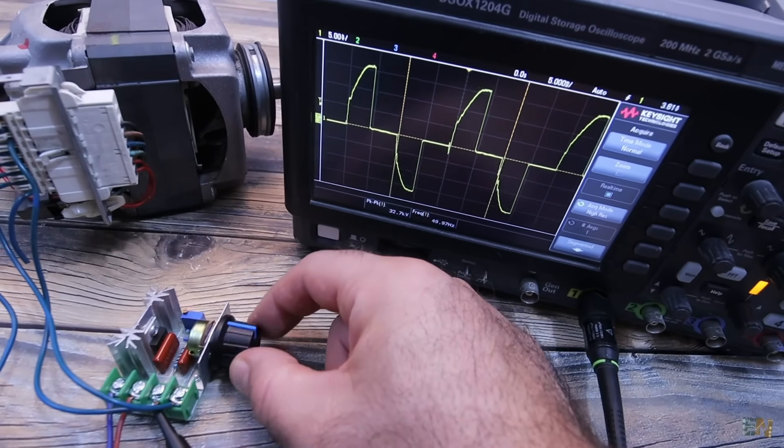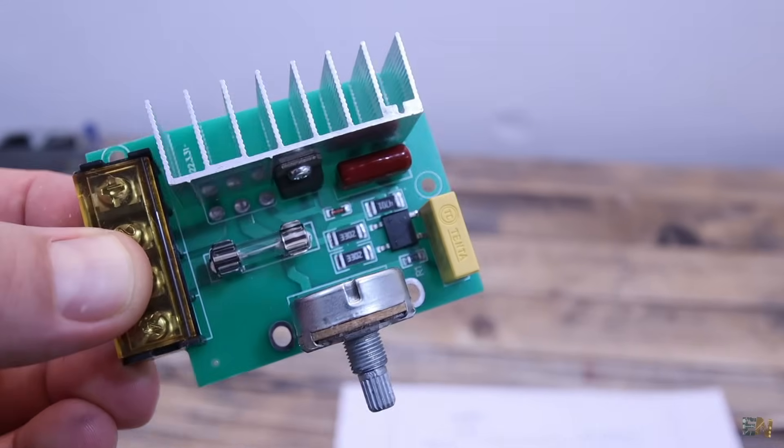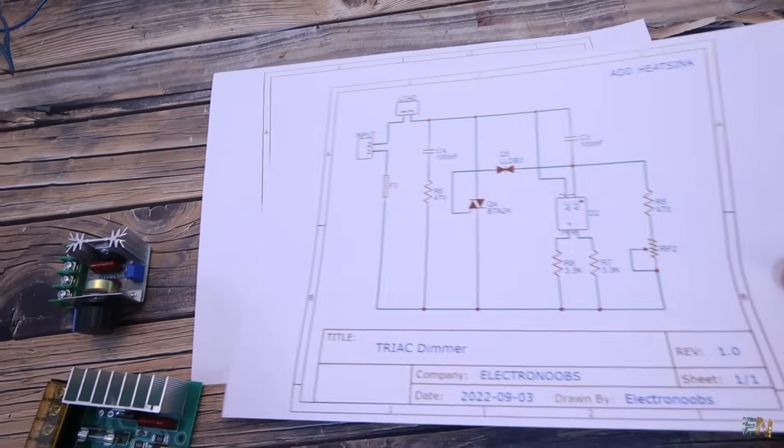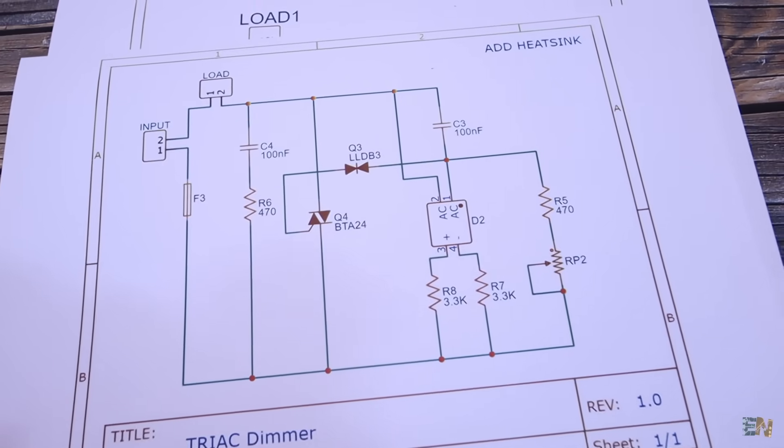Here I have another model which works kind of the same but it also uses a small full bridge rectifier. I've managed to reverse engineer the PCB and this is the schematic. Kind of the same, right?